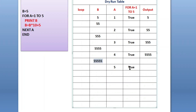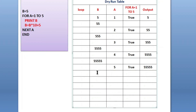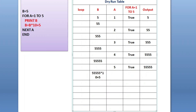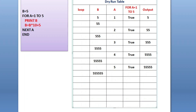When it is true, it will print b. The latest value of b — you can check — is 55555 (five 5s), so 55555 is printed in the output screen. After printing, again b equals to b into 10 plus 5. The b value of 55555 into 10 plus 5 gives 555555 (six 5s).